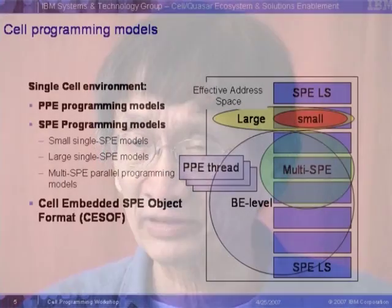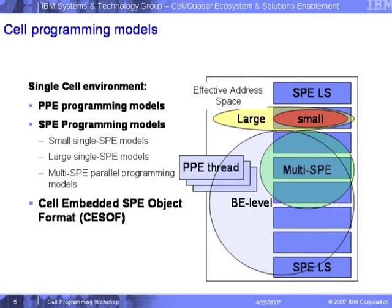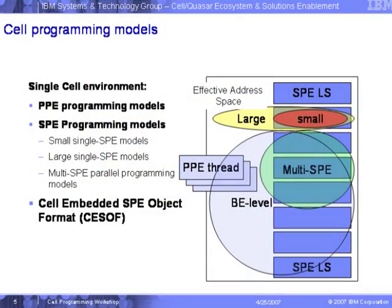On the other hand, you can have that address space spreading across the EA — the effective address of your main memory — and also to your SPE as well. Another scenario is where your SPE program's address space spans across different SPEs, covering a whole SPE or maybe a couple of SPEs. At the PPE level, the address space can also cover the EA, the main memory, and the local store on different SPEs.